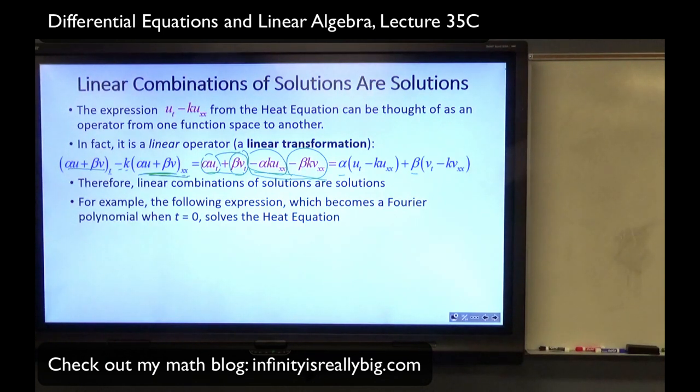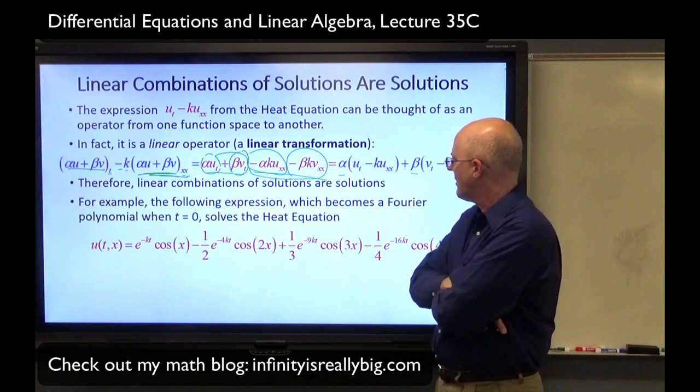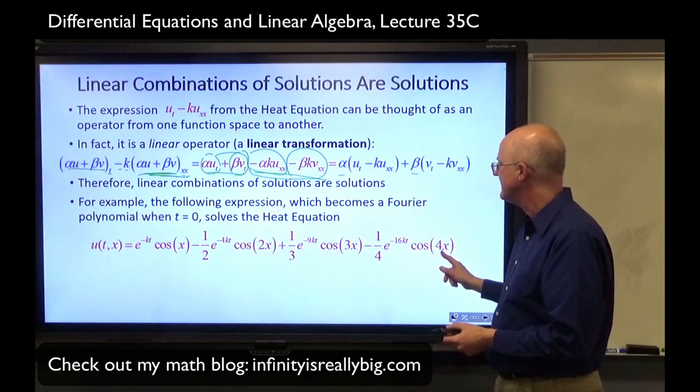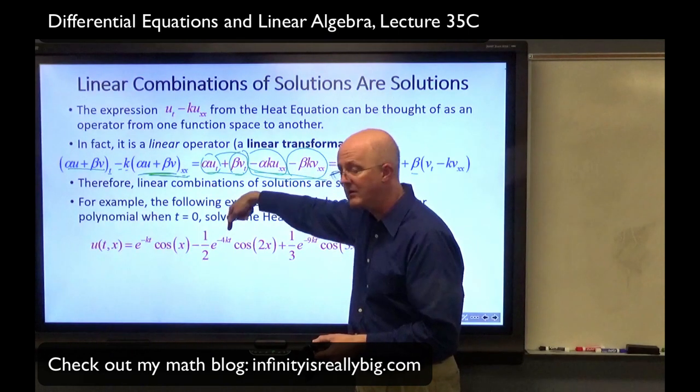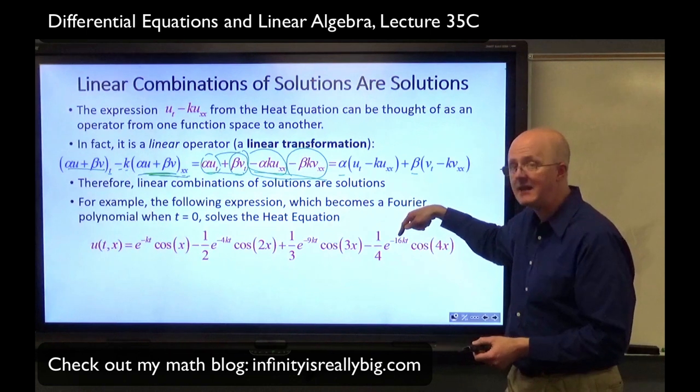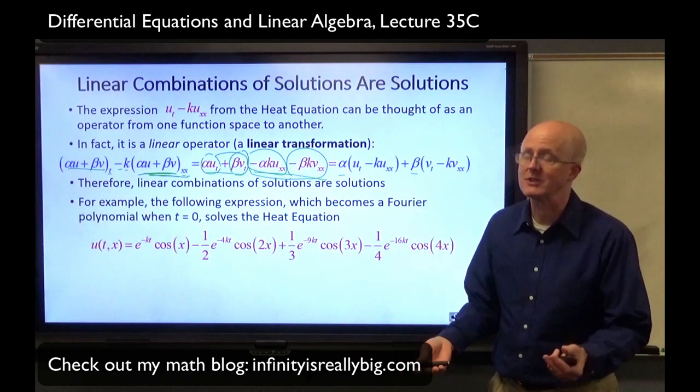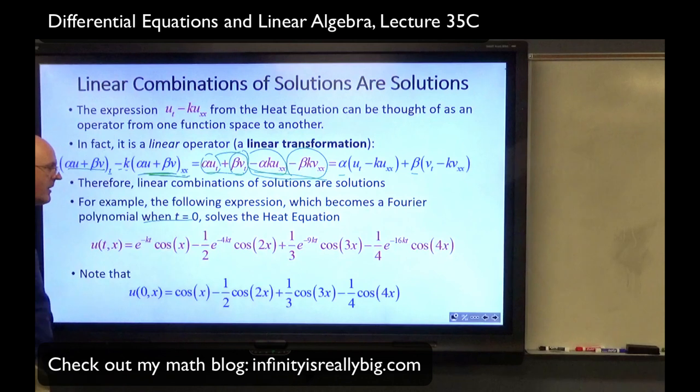Right-hand side is zero. In fact, solutions are the kernel of the linear operator. We can talk about kernels still, and that's saying what the function spaces are because that's a bit too technical for us. For example, the following expression, which becomes a Fourier polynomial when T is zero, solves the heat equation. What I did here was I took the first example with the cosines. I plugged in omega equals different things for each term. Omega is one there, omega is two there, omega is three there, omega is four there. The K I left arbitrary. There's an omega squared, one squared there is one, two squared is four, three squared is nine, four squared is 16. Where do the one, negative one-half, one-third, and negative one-fourth come from? I just made them up. Those are arbitrary coefficients.